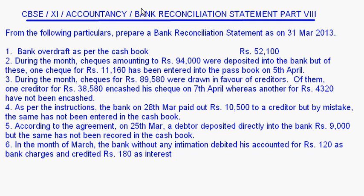From the following particulars, prepare a bank reconciliation statement on 31st March 2013. Bank overdraft as per the cash book is given as rupees 52,100. During the month, checks amounting to rupees 94,000 were deposited into the bank, but of these one check for rupees 11,160 has been entered into the passbook on 5th April. During the month, checks for rupees 89,580 were drawn in favor of creditors — of them one creditor for rupees 38,580 encashed his check on 7th April, whereas another for rupees 4,320 has not been encashed.